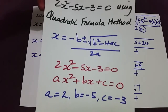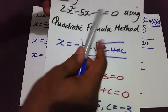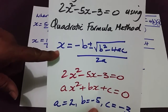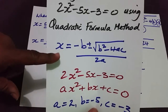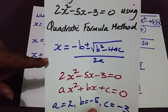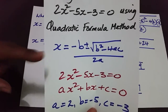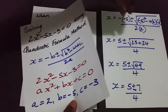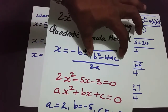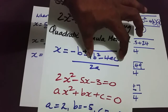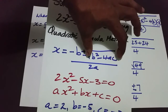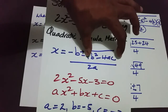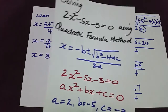So here is the quadratic formula, and we're using it to solve this quadratic equation. The beautiful thing about the quadratic formula is that it works every single time on all quadratic equations. The factorization method only works whenever this part gives you a number that, when you square root it, gives a nice whole number without any decimal points.